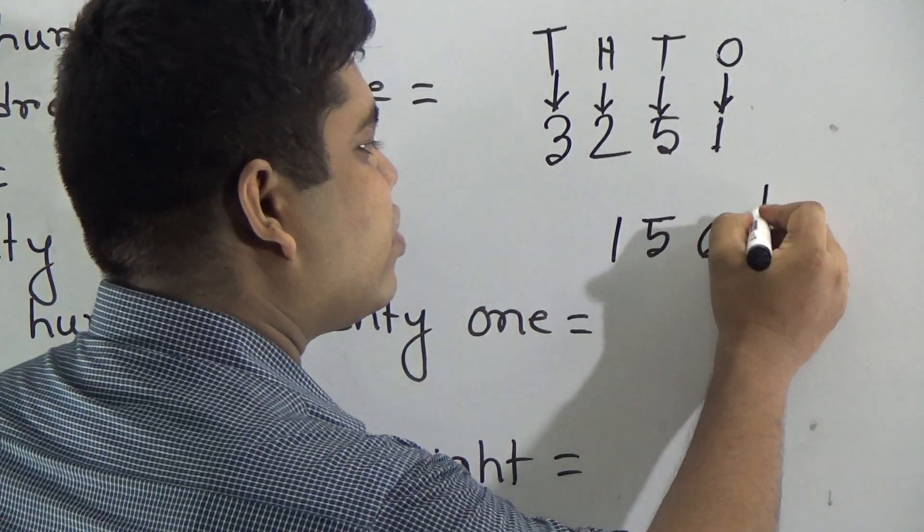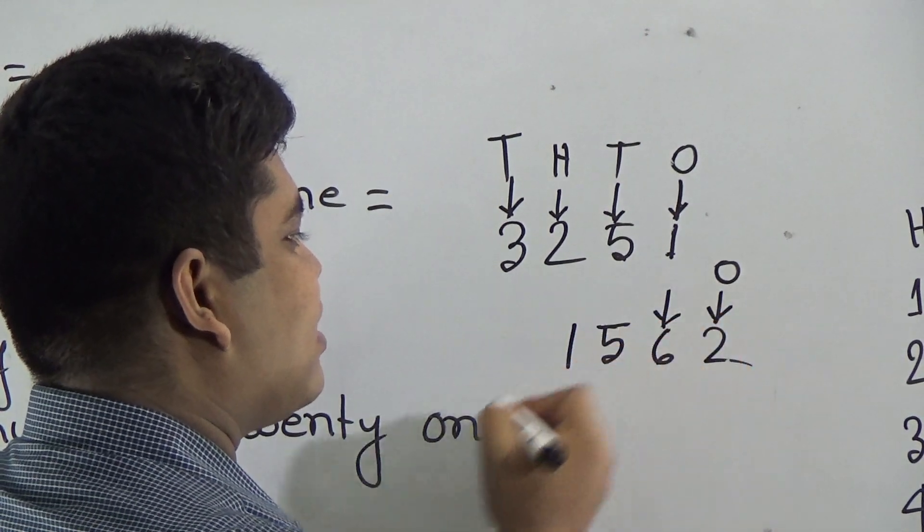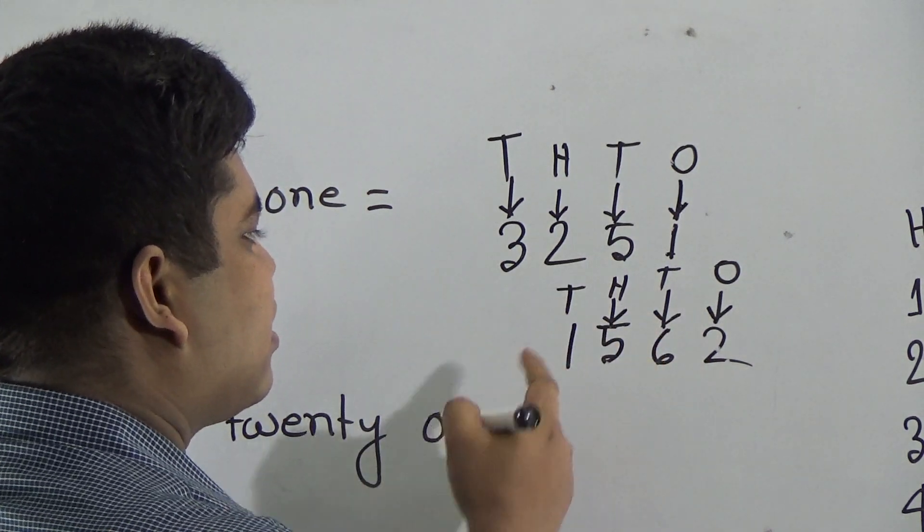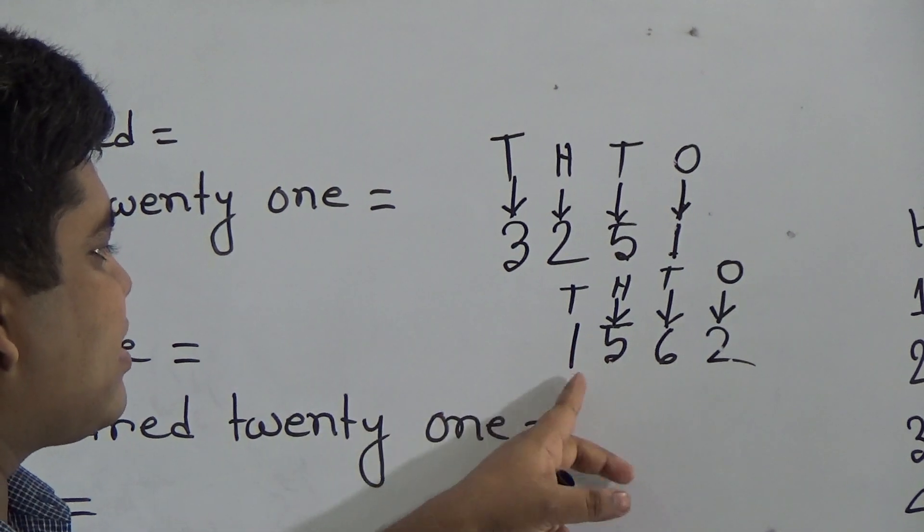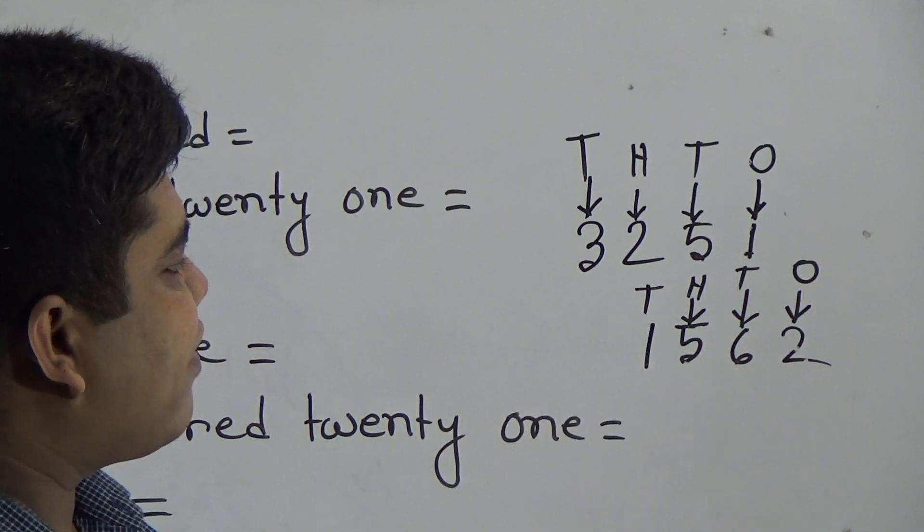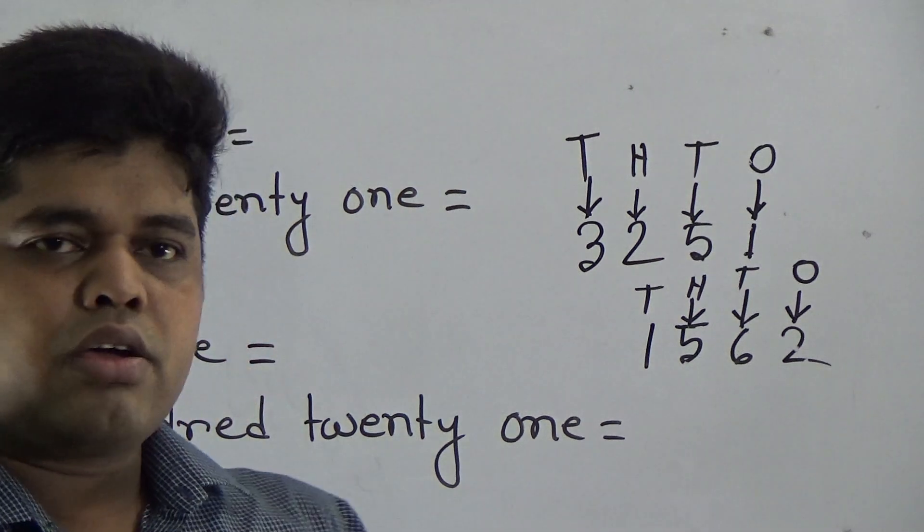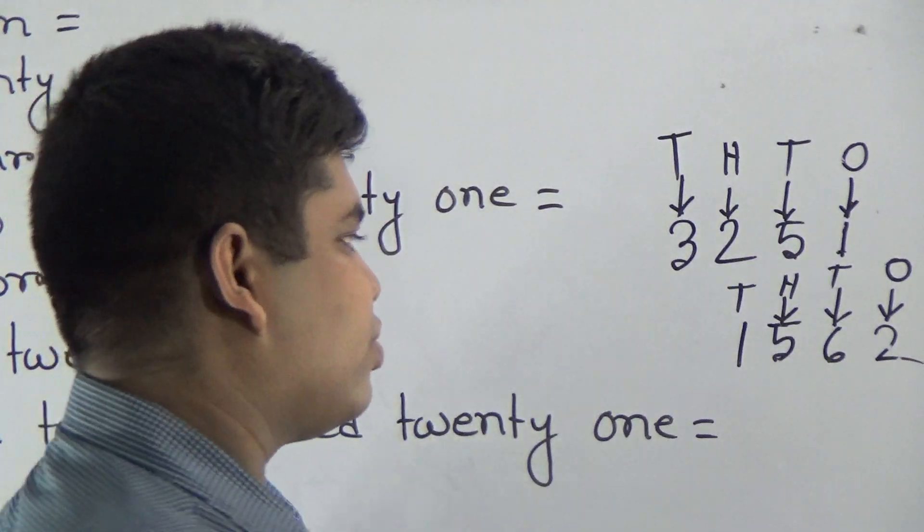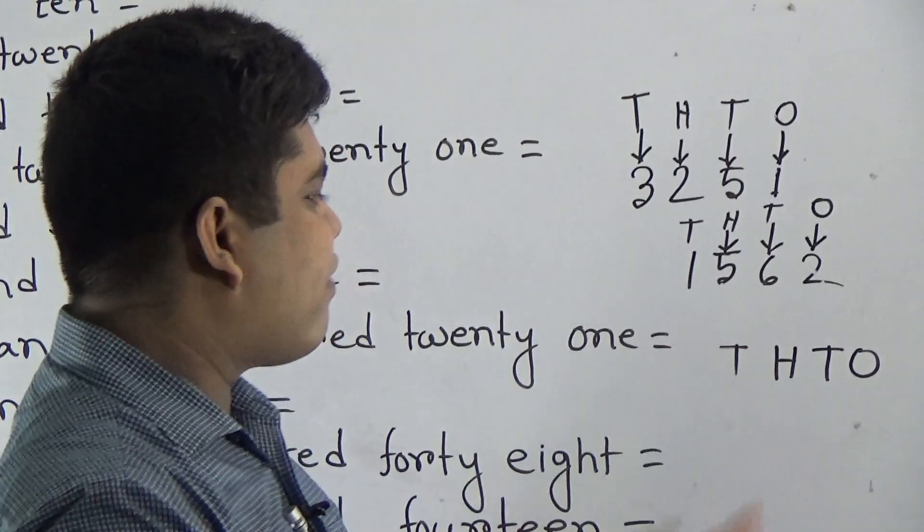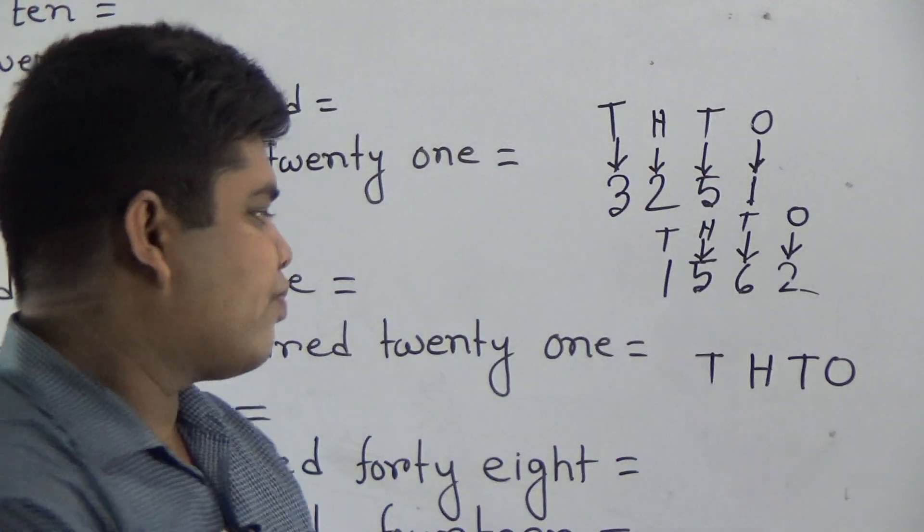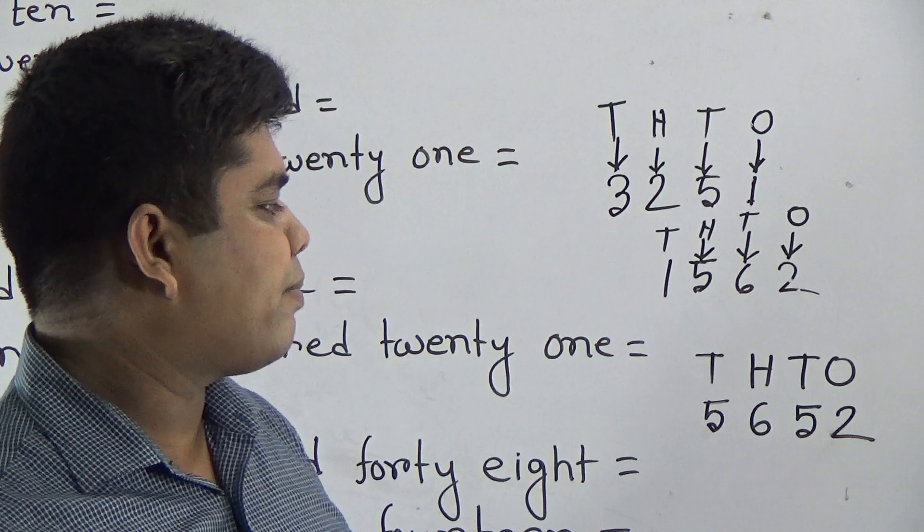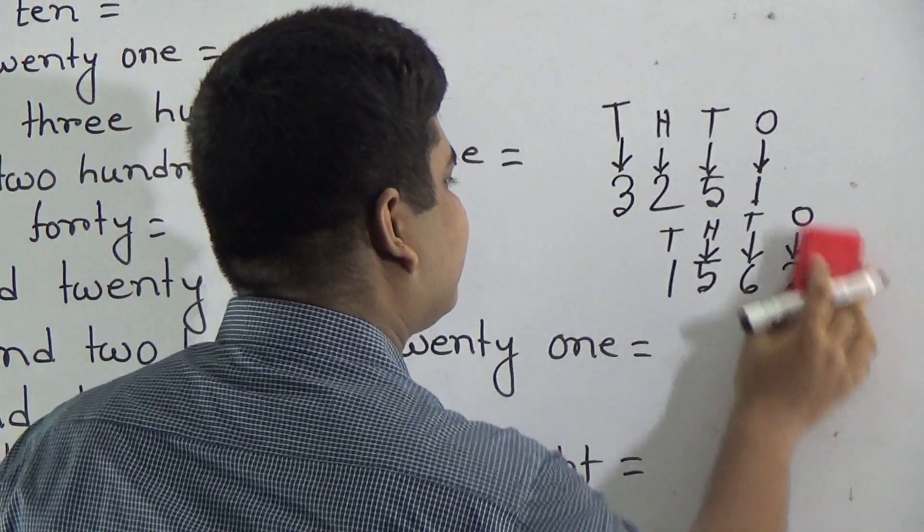Our next number is 1562, which is 2 in 1's place, 6 is in 10's place, 5 is in 100's place and 1 is in 1000's place. So, we read the number as 1562. Now, if I ask you to write in numbers 5652, how can you? First of all, write THTO. I repeat 5652. Now, I erase this and start to our class.